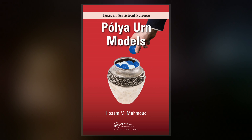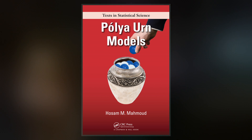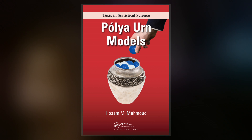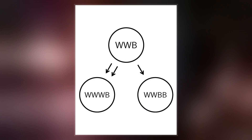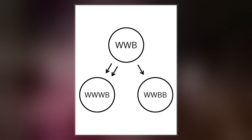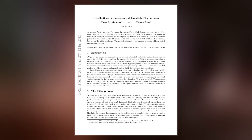In the basic Polya Urn model, the urn contains X white and Y black balls. One ball is drawn randomly from the urn and its color observed. It is then returned in the urn, and an additional ball of the same color is added to the urn, and the selection process is repeated. Questions of interest are the evolution of the urn population and the sequence of colors of the balls drawn out.